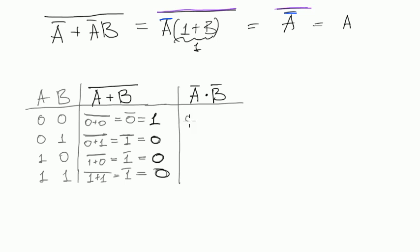0,0. It will be 0 negated multiplied by 0 negated. It will be 1 multiplied by 1, which is 1.